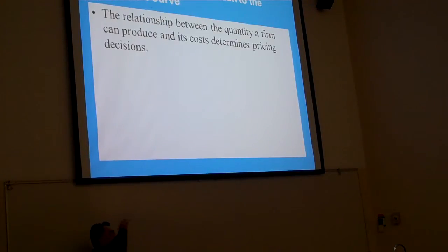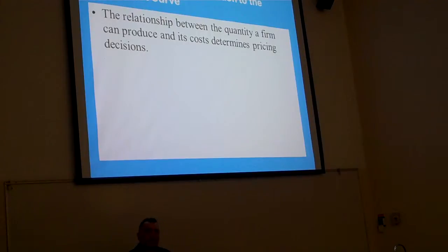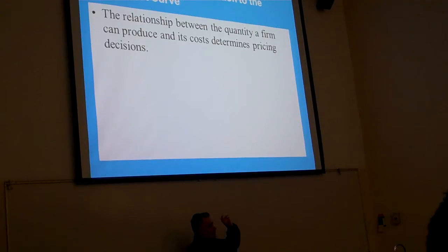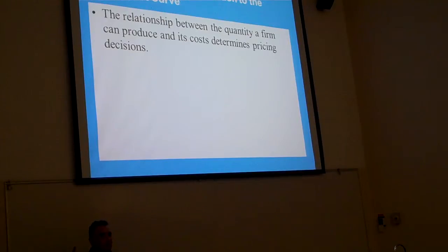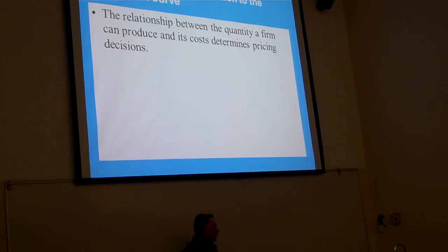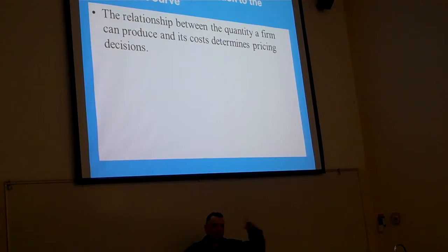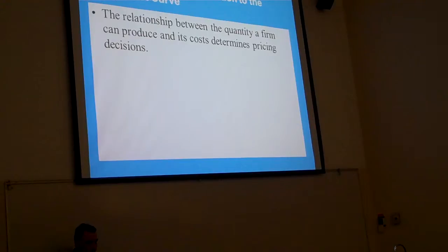The production function is the relationship between input and output. From that, we can derive the total cost curve. The production function shows input vs. output; the total cost curve shows input vs. cost. So there are two things happening now, and we'll put all three together in a moment.